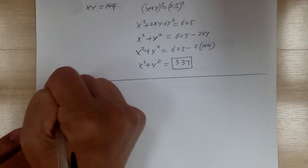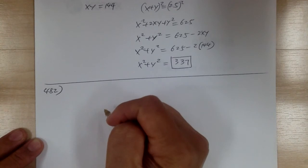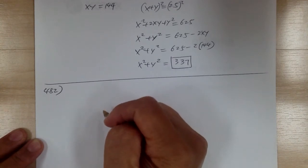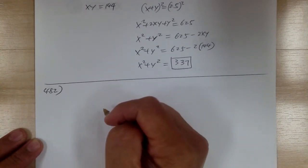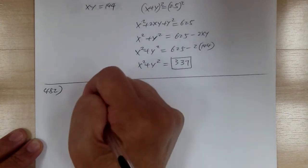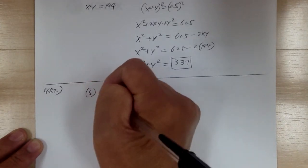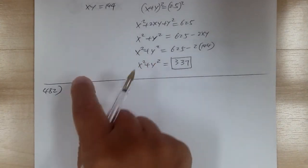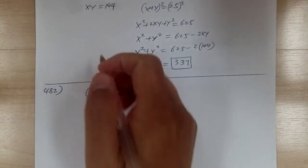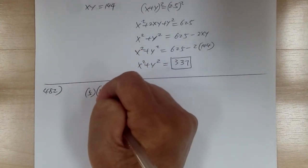Let's go to 482. Joanne's average through 5 math tests was m. So 5 tests with average m, times by m gives you the total. After the 6th test, plus the 6th test score.